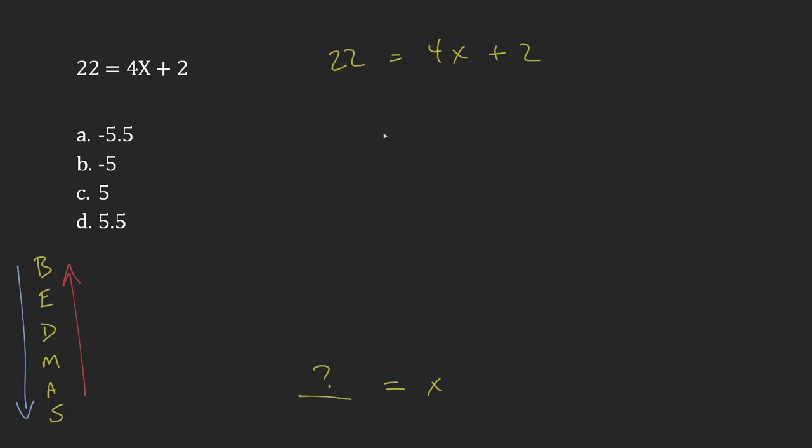So I'm going to start by subtracting 2 from this side and subtracting 2 from this side. So 22 minus 2 gives me 20. And then on the other side, positive 2 and negative 2, those cancel. So I'm left with 4x.